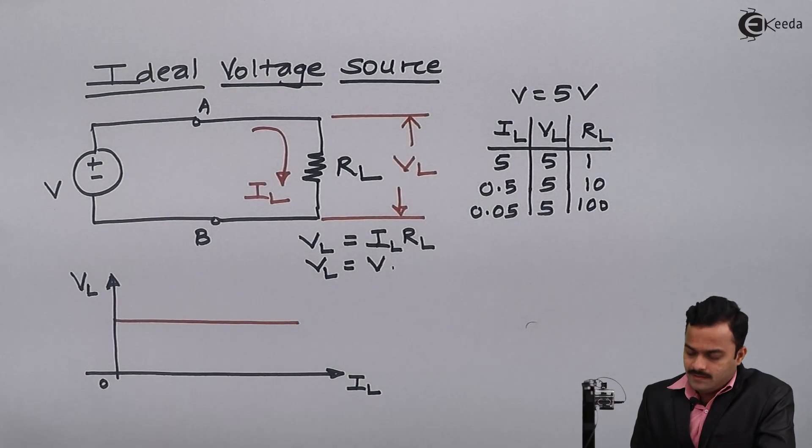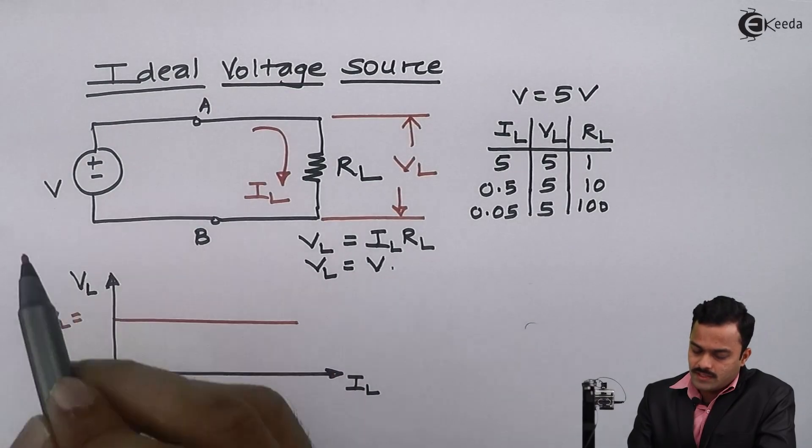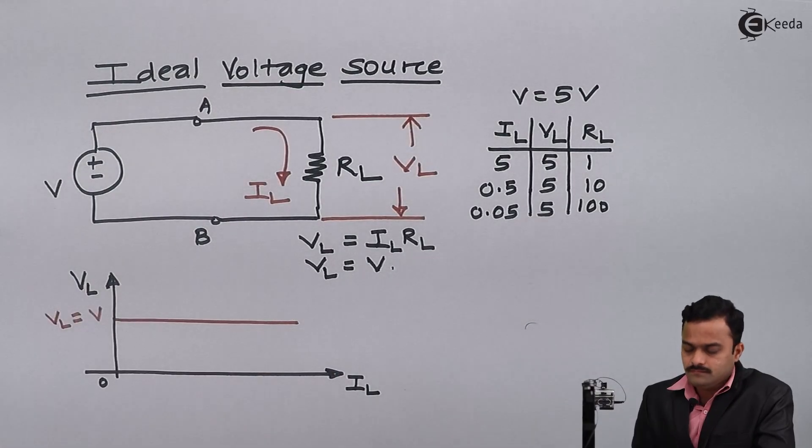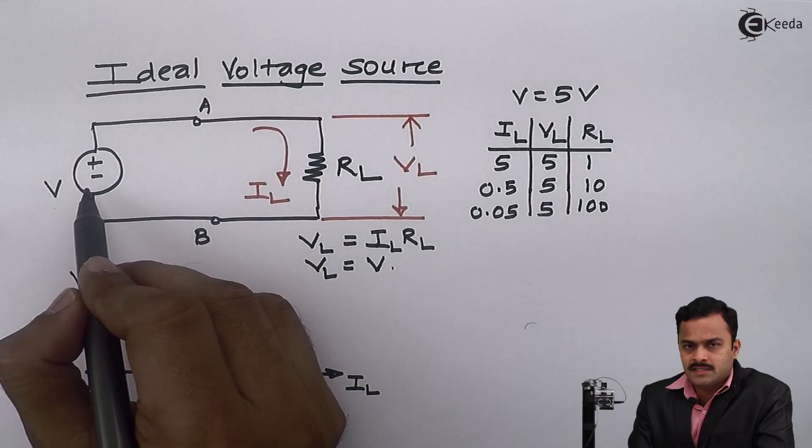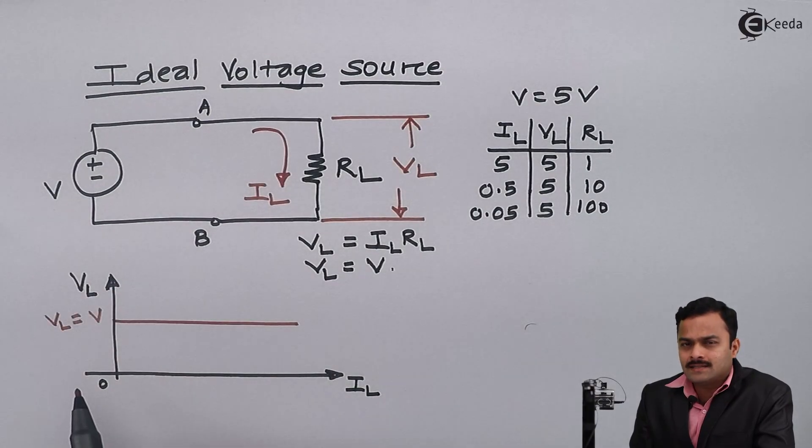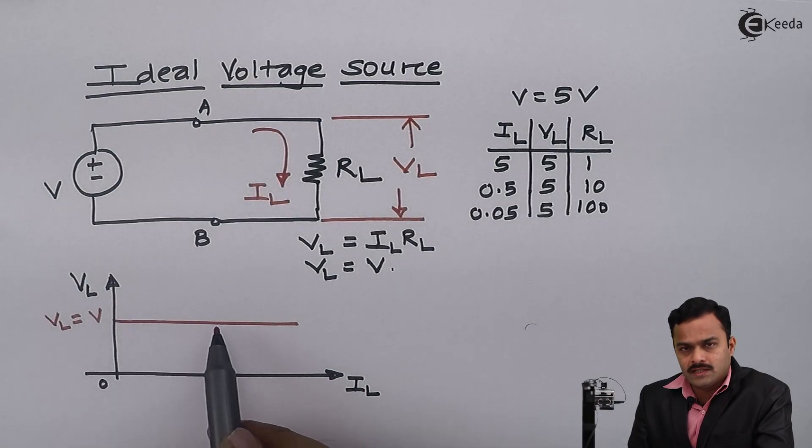That VL value is same as voltage source V. So irrespective of any value of current IL, I will always have VL fixed, and that is decided by this voltage source. This is the representation of an ideal voltage source - irrespective of any load condition or any load current, I'm having the same voltage.